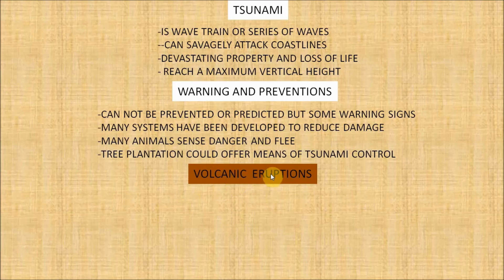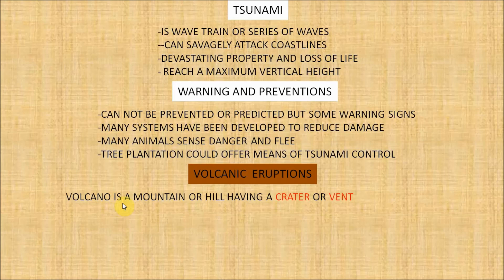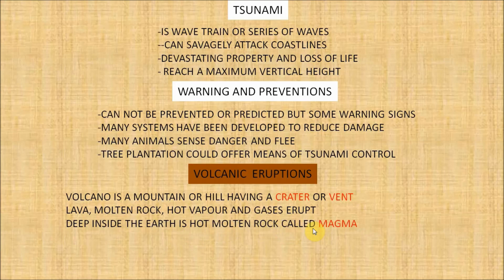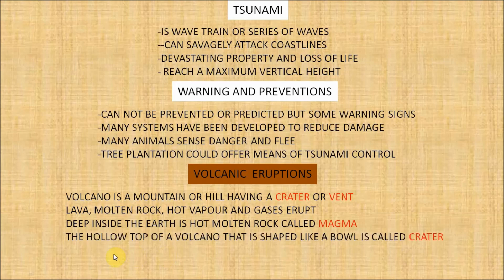Now let's see volcanic eruptions. A volcano is a mountain or hill having a crater or vent through which lava, molten rock, hot water and gases erupt from the earth's crust. Deep inside the earth is hot molten rock called magma. This magma comes up and collects in a chamber. When the pressure in this chamber builds up, the magma finds a release through an opening or crack called a vent. When magma erupts through the earth's surface, it is called lava. On cooling, it becomes volcanic rock. The hollow top of a volcano shaped like a bowl is called a crater.